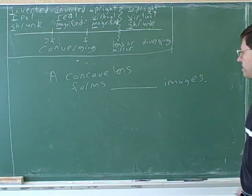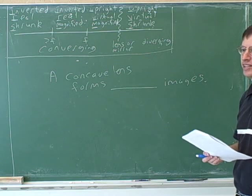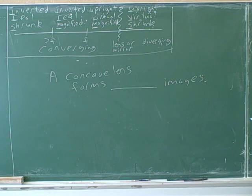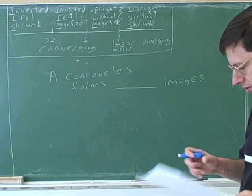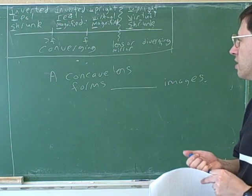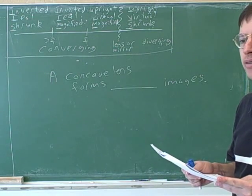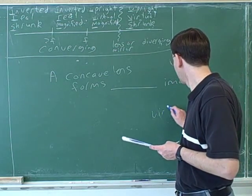What can you tell me about the characteristics of the images formed by a concave lens? It's a virtual image. Good. Virtual, upright, and shrunk.